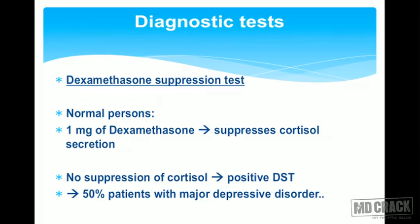Let's go to some diagnostic tests. The important test is the dexamethasone suppression test. In a normal person, one milligram of dexamethasone suppresses cortisol secretion — you are giving a steroid, dexamethasone, so it suppresses endogenous cortisol secretion. If there is no suppression of cortisol secretion, this is called a positive dexamethasone suppression test, and this comes positive in 50% of patients with major depressive disorder.